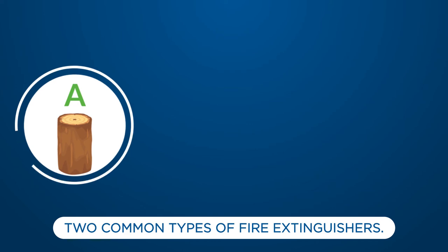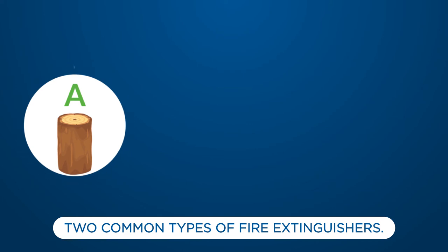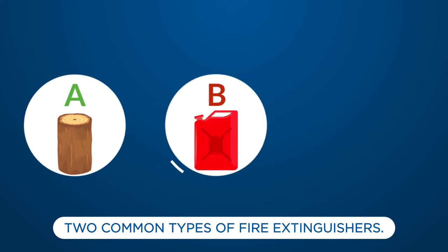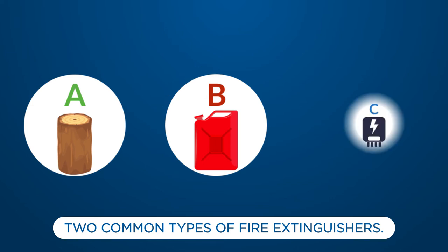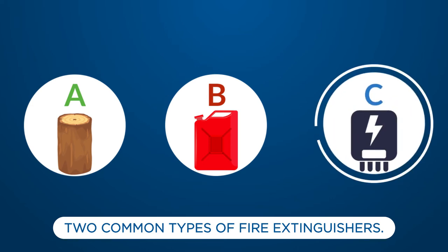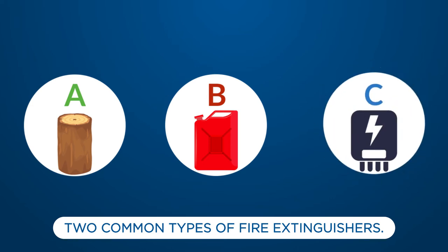Class A is for ordinary combustibles such as trash, wood, and paper. Class B is for liquids and gases such as gasoline and grease in a frying pan. Class C is for electric sources such as wiring and fuse boxes.